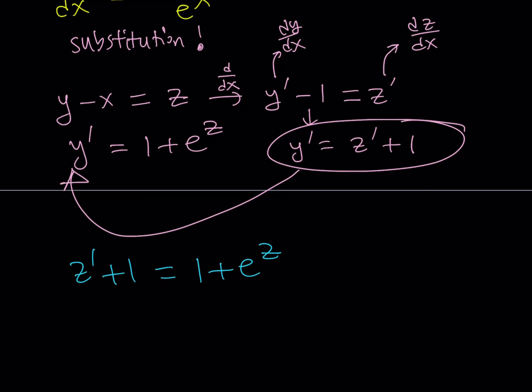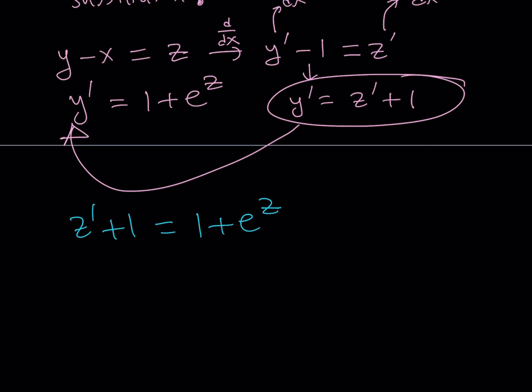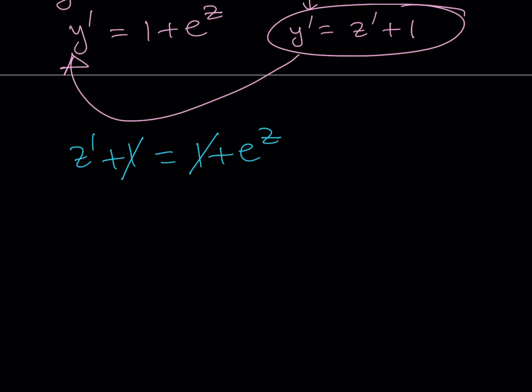This is beautiful because we only have one variable, which means we can make this separable for sure. Notice that we can get rid of the 1s on both sides, which is really nice, and we come up with a simple equation. Writing z prime as dz over dx, it equals e to the power of z. To make it separable: divide by e to the power of z and multiply by dx.